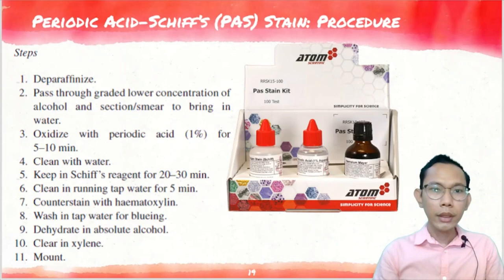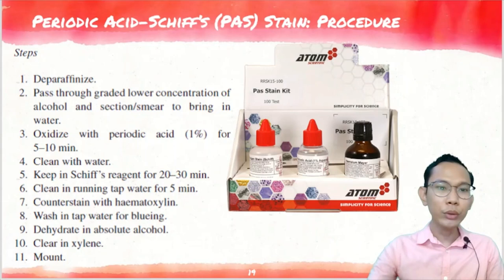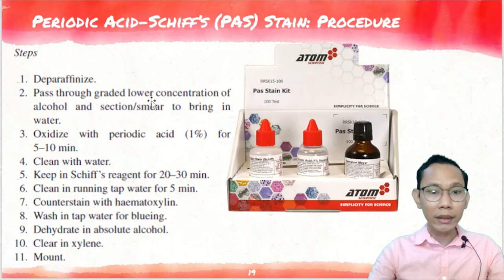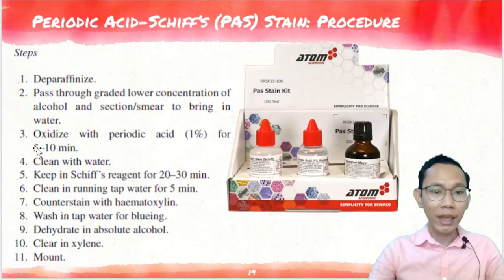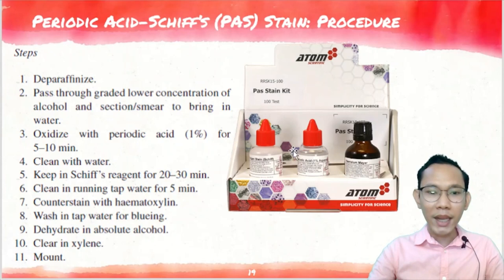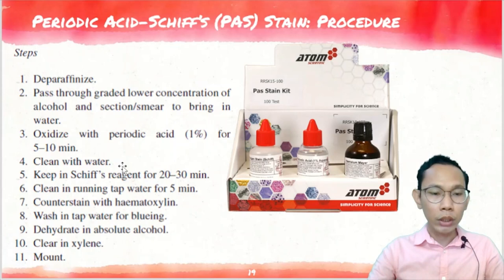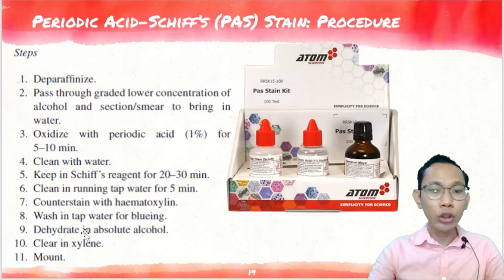This is the procedure for your Periodic Acid-Schiff stain. First, you have to deparaffinize. Second, pass through the graded lower concentration of alcohol to bring in water. Then oxidize with 1% periodic acid for 5–10 minutes — this is the first solution. The complete PAS stain kit includes: your periodic acid, your Schiff's reagent, and your counterstain using hematoxylin. After oxidizing with periodic acid, clean with water. Keep in Schiff's reagent for 20–30 minutes. Clean in running tap water for 5 minutes. Counterstain with hematoxylin. Wash in tap water for bluing. Dehydrate in absolute alcohol. Clear. Then mount.